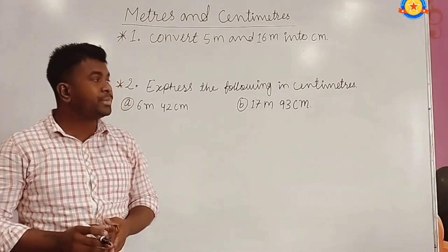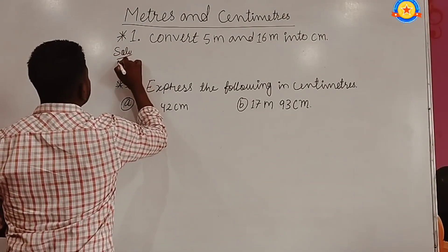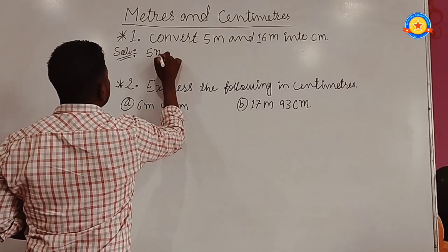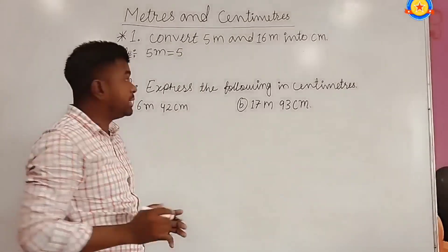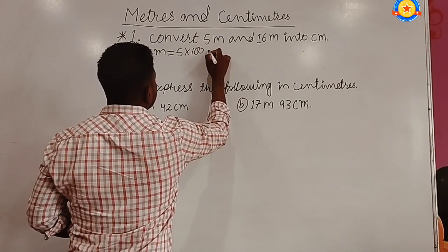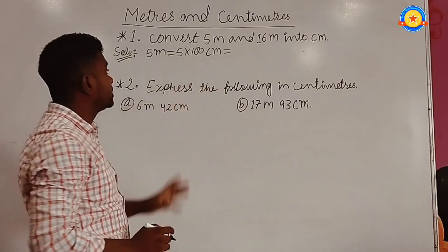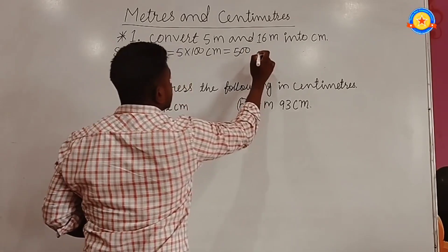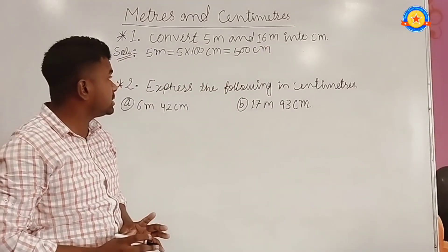We have to convert into centimeters. We have 5 meters, so we multiply by 100. 5 into 100 centimeters equals 500 centimeters. So 500 centimeters is the answer.